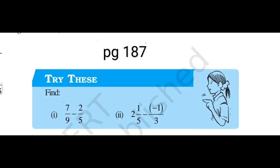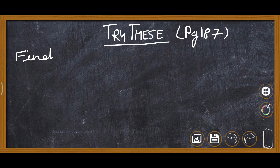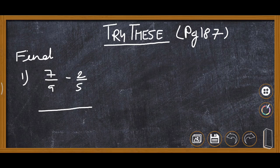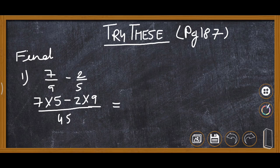On page 187, another Try These is given where we find answers using LCM since denominators are different. First question: 7/9 - 2/5. LCM of 9 and 5 is 45. So 7 is multiplied by 5 giving 35, and 2 is multiplied by 9 giving 18, all over 45.